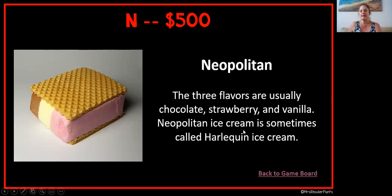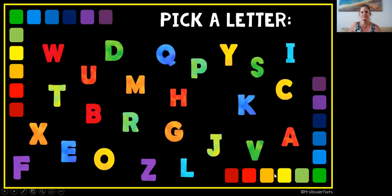Every answer slide gives a little explanation of the answer, and there's always an image — with the exception of a couple of slides where the image in the question would give away the answer, so I didn't put an image on those. Students usually keep score with a team captain holding a piece of paper on their desk, writing down the scores as we go. Then we go back to the game board, and now you can see that the N we selected is gone. That's really important so students don't accidentally select it again later in the game, which could get very confusing after you've selected a lot of questions.